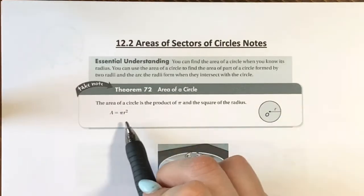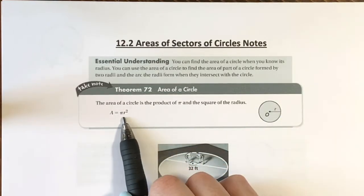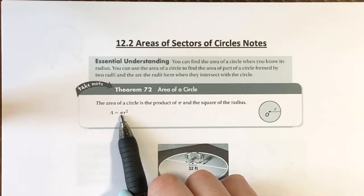You probably recognize this formula: A equals pi r squared, where r is your radius.